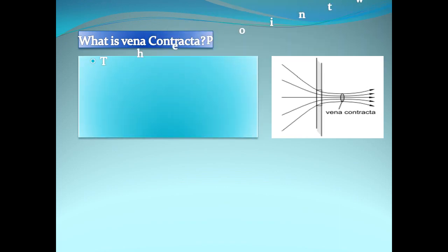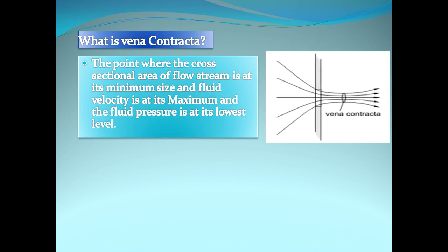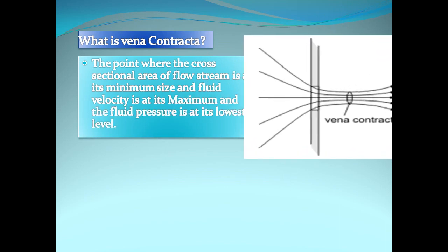What is vena contracta? The point where the cross-section area of flow stream is at its minimum size and fluid velocity is at its maximum and the fluid pressure is at its lowest level is called vena contracta.